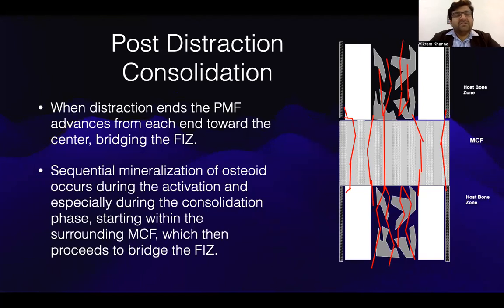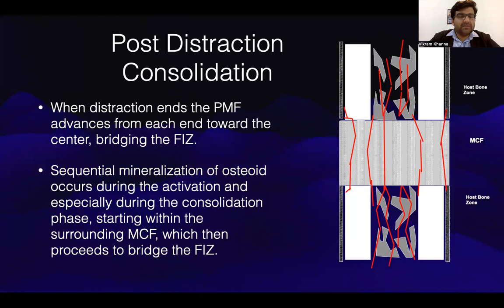Post-distraction consolidation: when the distraction ends, the primary mineralization front advances from each end towards the center, bridging the fibrous interzone. Sequential mineralization of the osteoid occurs during the activation and especially during the consolidation phase, starting within the surrounding micro-column formation, which then proceeds to bridge the fibrous interzone.